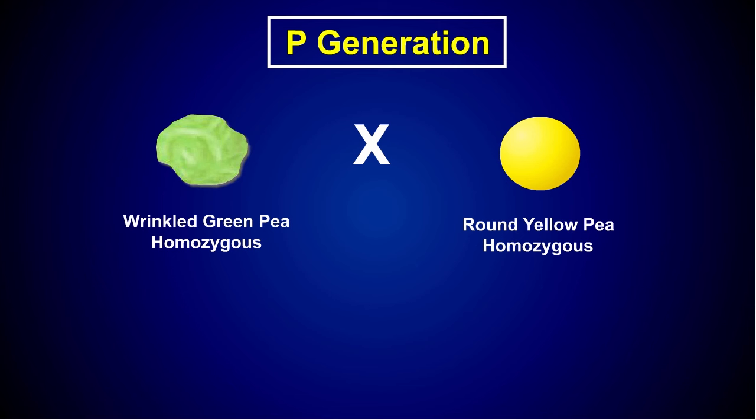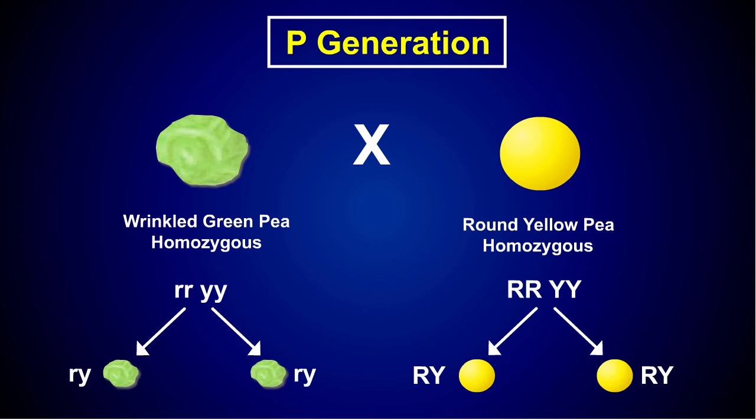A plant homozygous for wrinkled green peas is crossed with a plant homozygous for round yellow peas. Because both parents are homozygous for both traits, only gametes coding for wrinkled green peas or gametes coding for round yellow peas are produced.